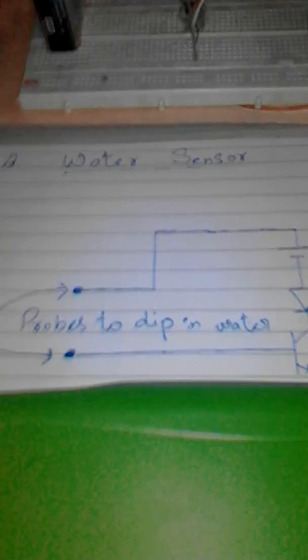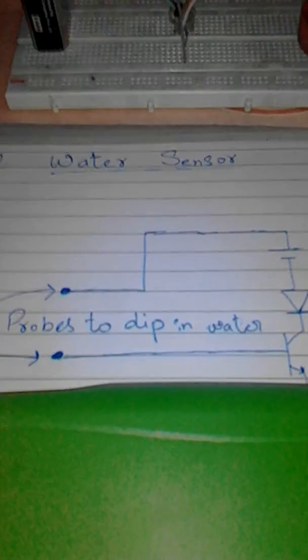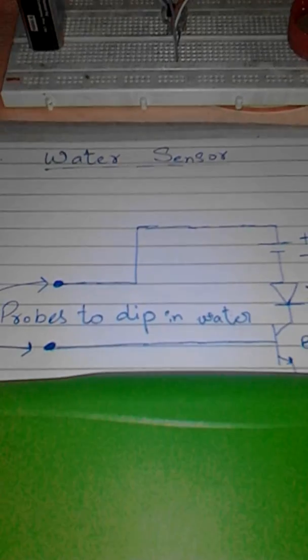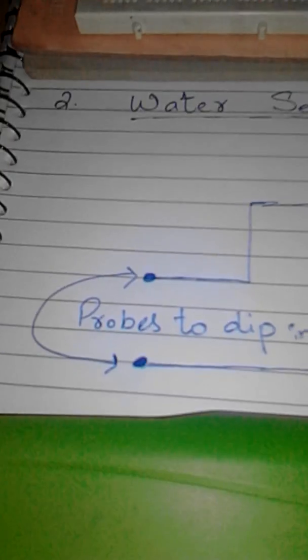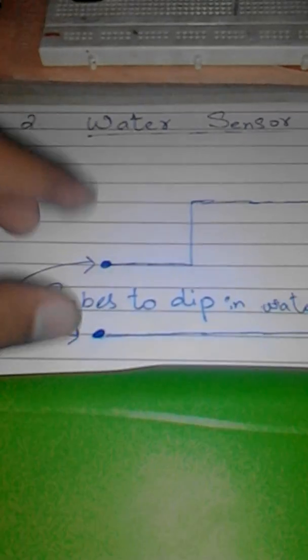Assalamu alaikum. Today I'm going to present you a very simple water sensing project, a semester based mini project. The parts list are 9 volt battery, LED, BJT transistor NPN, and two props which are used for sensing.